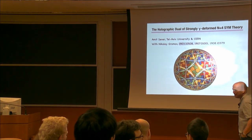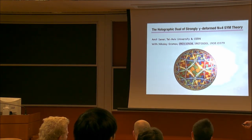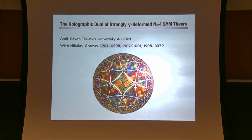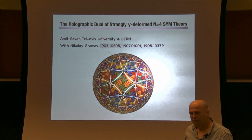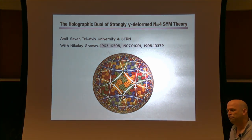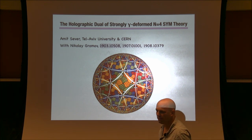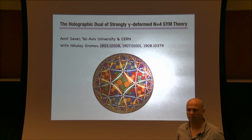Thank you very much for the invitation. It's a pleasure to be back here. Today I want to tell you about a work that I've been doing with Nikolai Gromov. We studied the holographic description of quite a surprising holographic dual, what we call the strongly coupled gamma-deformed N=4, which is something also called the fishnet.